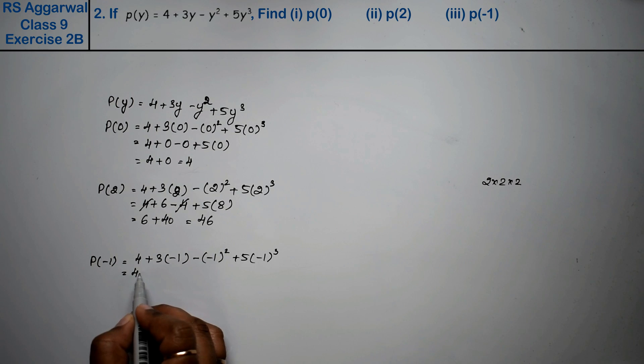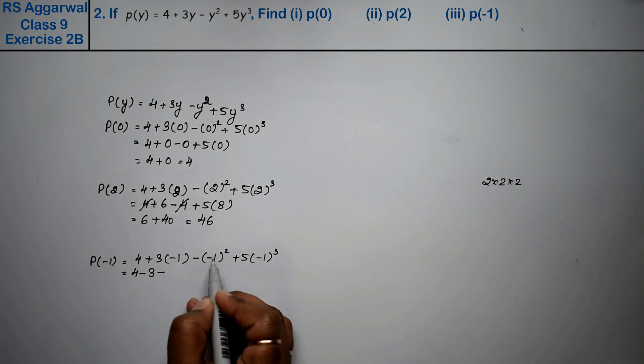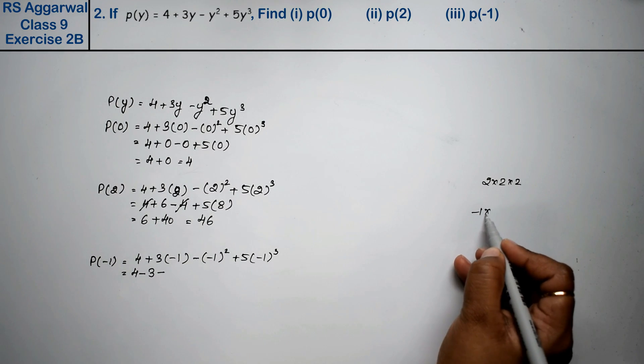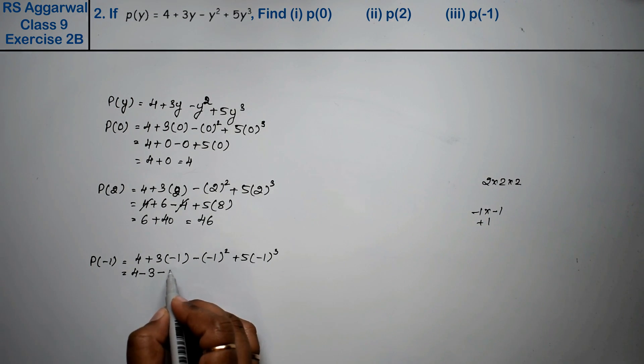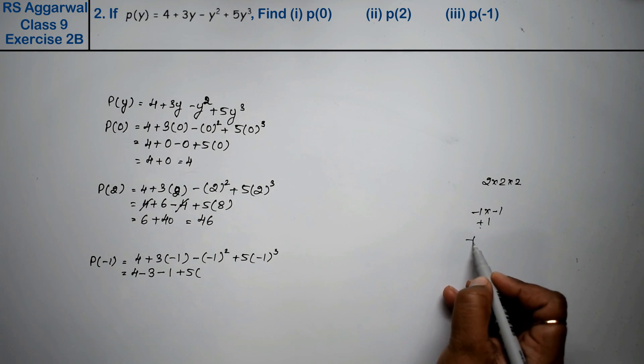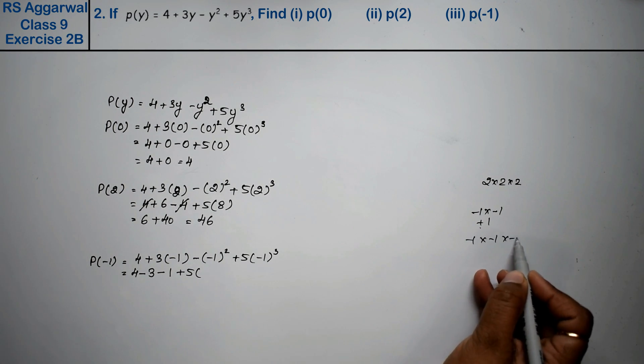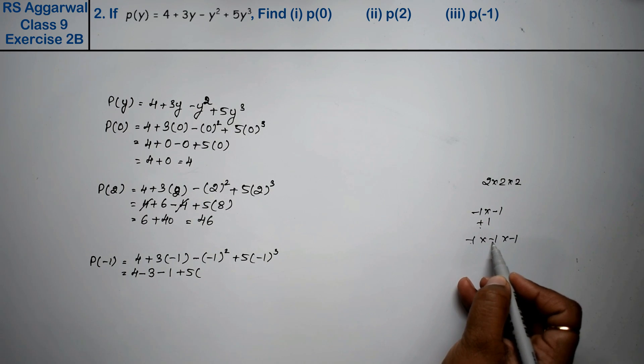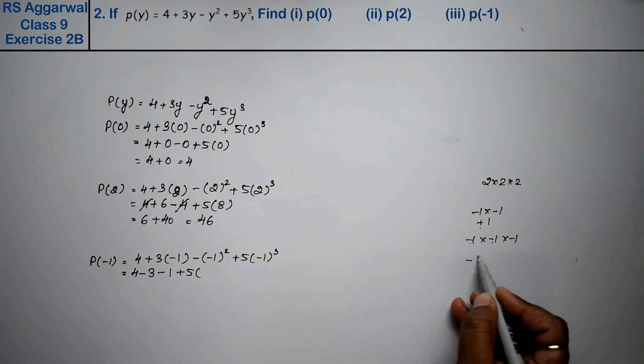4 plus -3 minus (-1) into (-1), which is plus 1, plus 5 into (-1) cubed. (-1) into (-1) into (-1) equals -1.